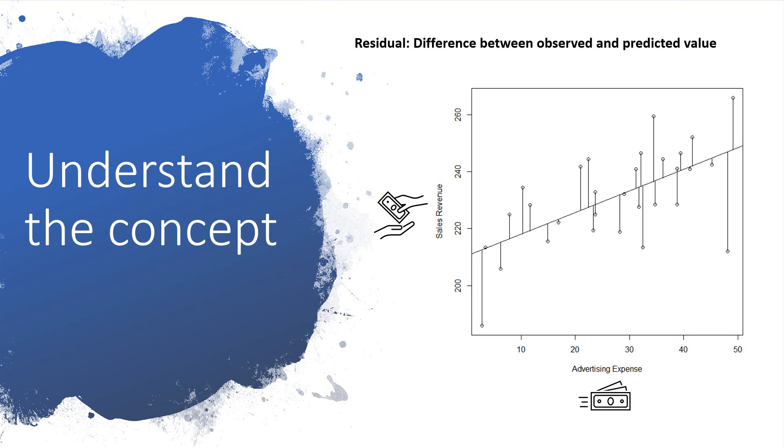A residual is the distance from a point to the line, or the difference between the observed value from our data and the value predicted by our model. They are presented here as the vertical distance from a point, the observed value, to the line, the predicted value. OLS gets its name from how it manages to find the best fitting linear model, where the differences between the predicted and observed values will be the smallest.